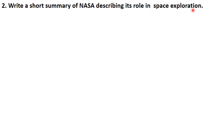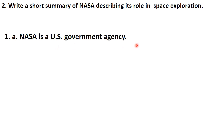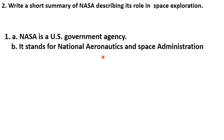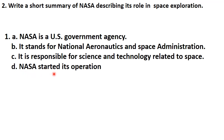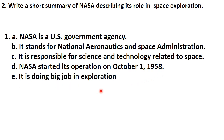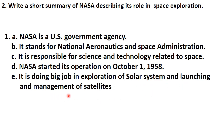The next question: write a short summary of NASA describing its role in space exploration. NASA is a US government agency. It stands for National Aeronautics and Space Administration. It is responsible for science and technology related to space. NASA started its operations on October 1st, 1958. It is doing big work in exploration of the solar system and launching and management of satellites.